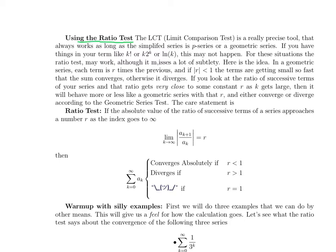The limit comparison test is a really precise tool. As long as the simplified series looks like a p-series or a geometric series, it's going to answer all your questions. Anything that has polynomials in it is going to turn into a p-series, k to a power. Anything that has exponentials in it, like 2 to the k or 3 to the k, is going to turn into a geometric series in the simplified version.